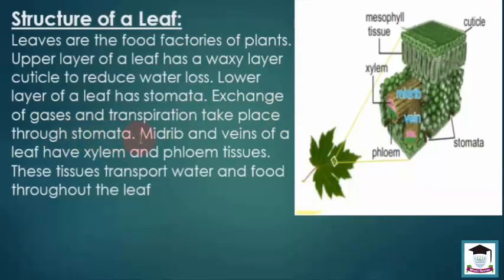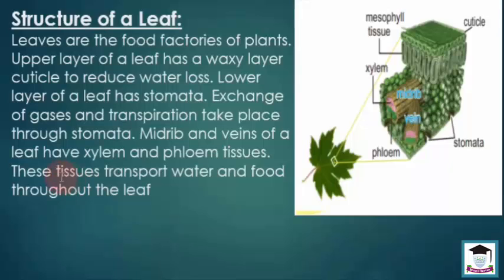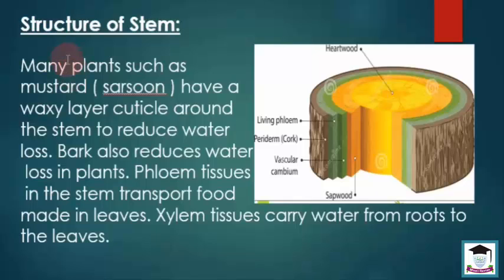Mid rib and veins of a leaf have xylem and phloem tissues. Patte ki mid rib aur bareek bareek sharyanen — un ke andar xylem aur phloem tissues dono maujood hote hain. These tissues transport water and food throughout the leaf — yeh patte ke tamam area ke andar khoraak aur paani ko pohonchane ke liye zimmedaar hain.